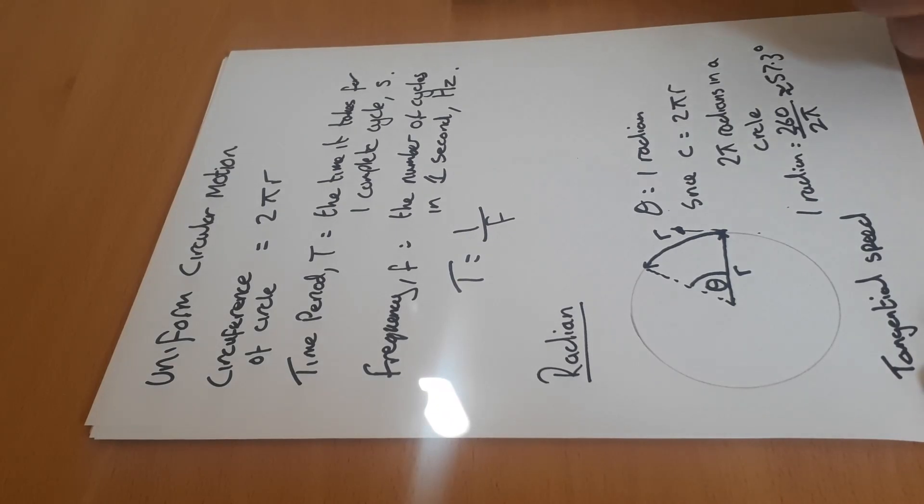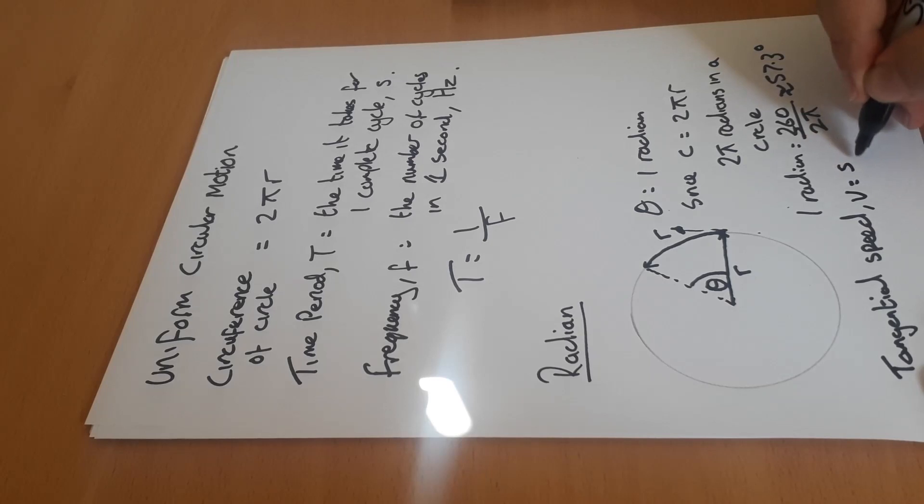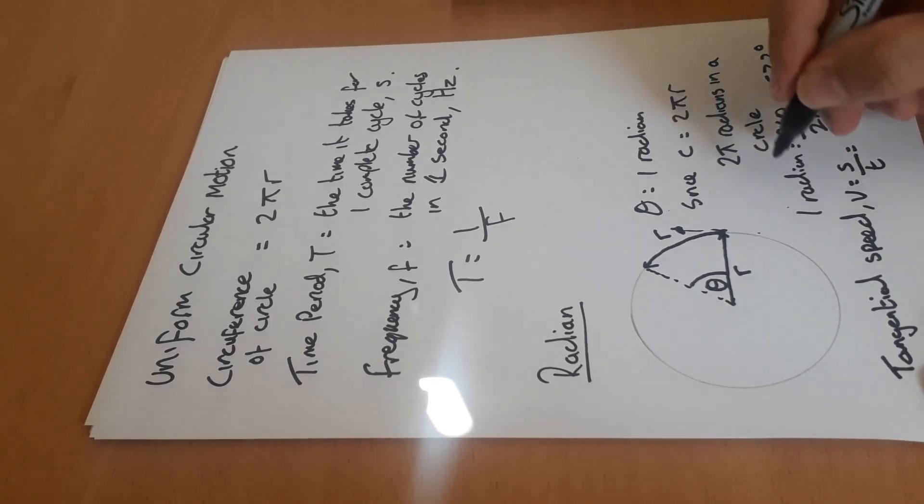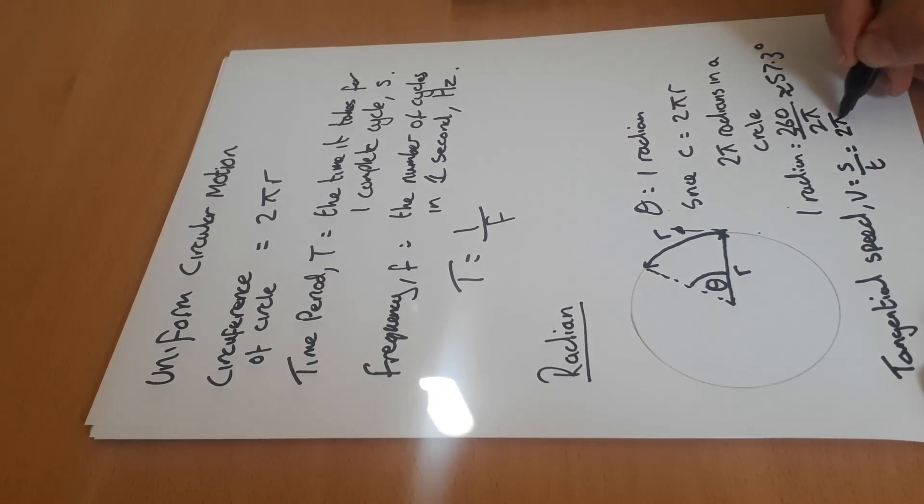Now the way we can work out our tangential speed is using our basic speed formula, which is distance divided by time.